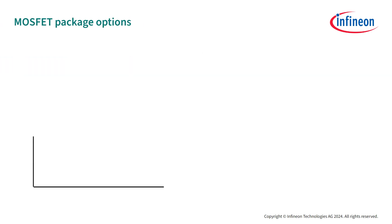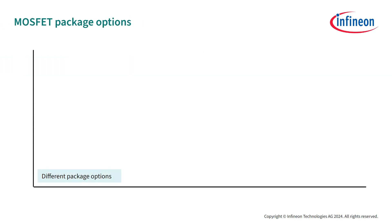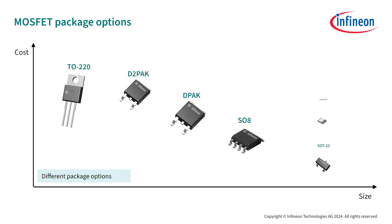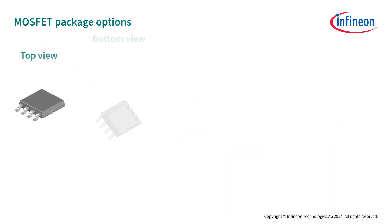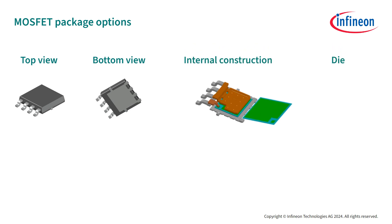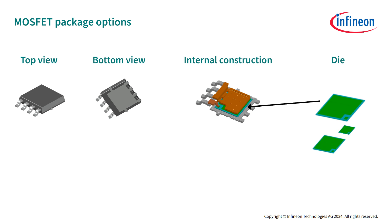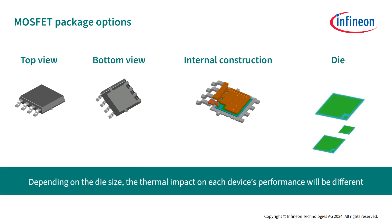The MOSFET is available in many different package options, which vary in price and size. Some packages use the three terminal connections, even though they may have more than three pins. Additionally, different packages have different die sizes. The die is the silicon present on the inside of the device. The right die size and package combination are very important when selecting a MOSFET, because depending on the die size, the thermal impact on each device's performance will be different.